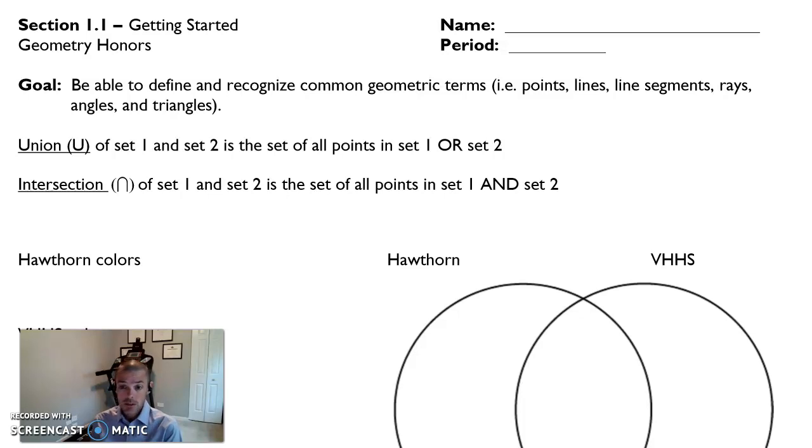You can see here that two words that we have to focus on right away are the union and the intersection. The union is when a set one and a set two are combined and it's all points or all data points that are within those two sets. Set one or set two is what we think about when we say union and we use that symbol that looks like a U.